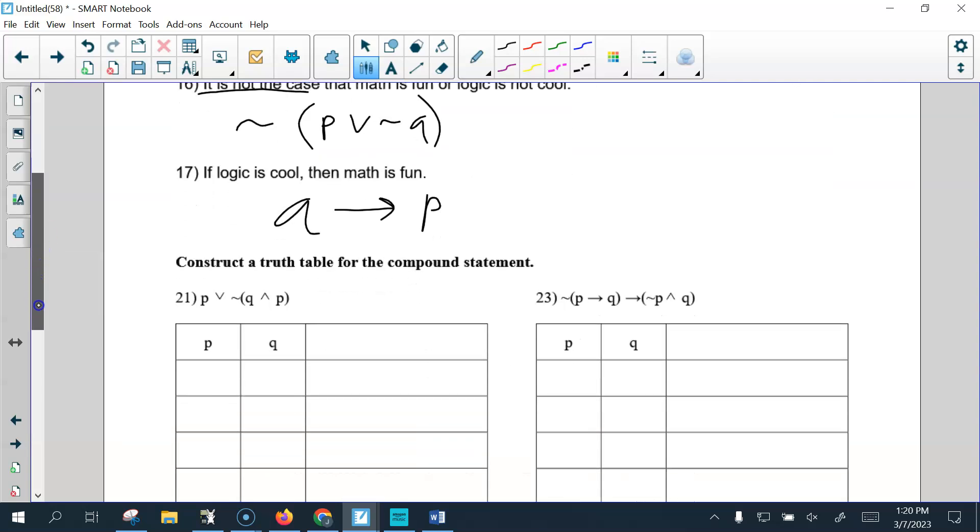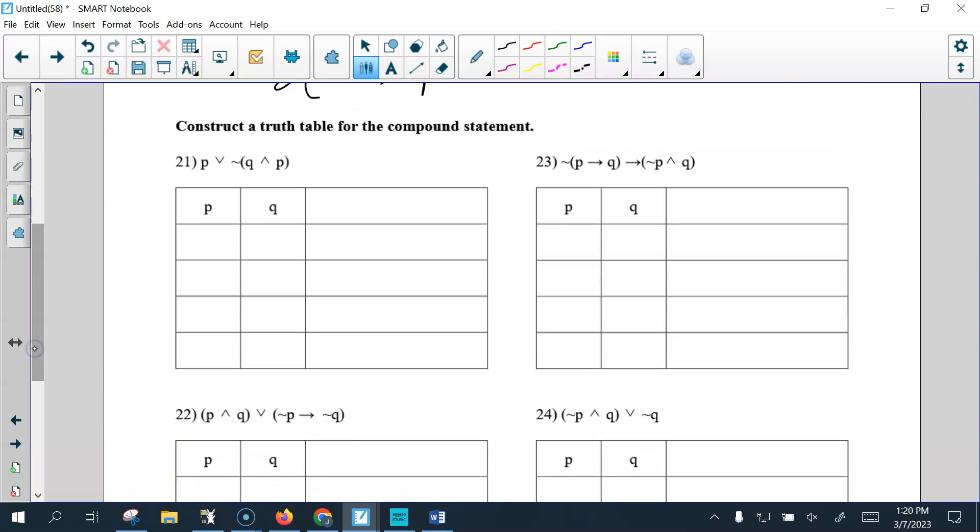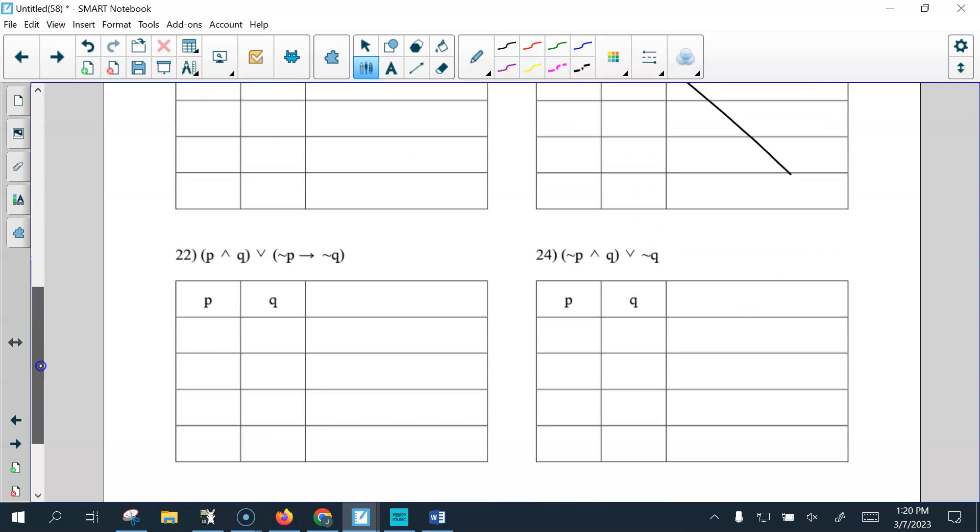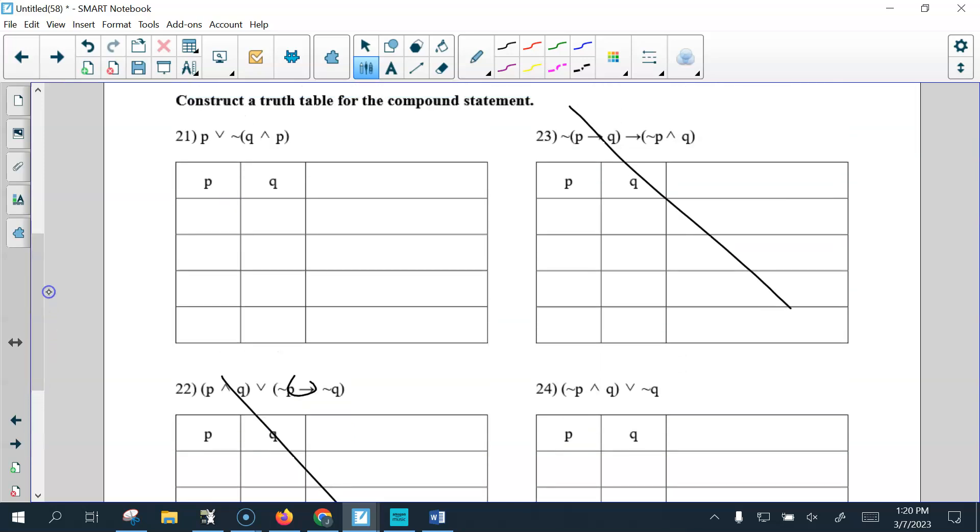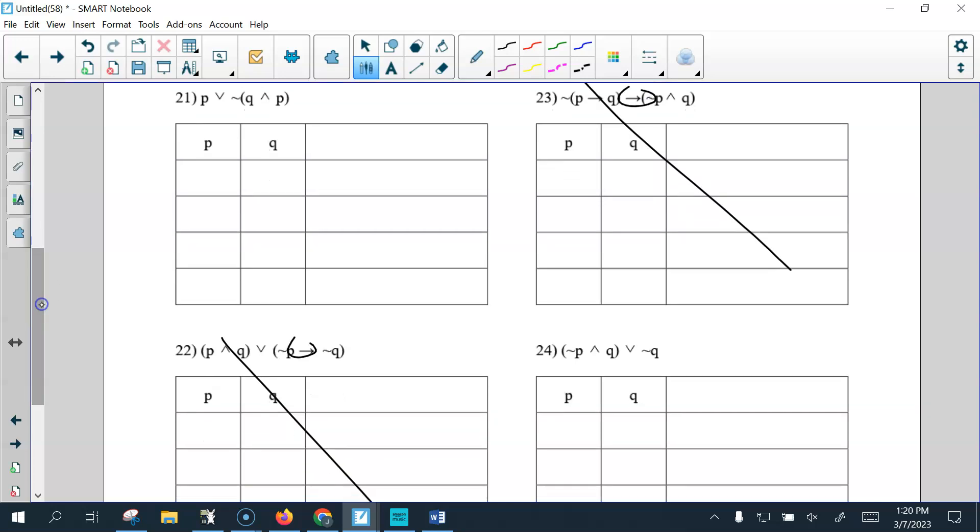And, we didn't have this in the notes, but not a big deal, because I'm going to take out more of the problems later. But, if, then, we use an arrow. So, if logic is cool, then math is fun. And, that's all we're going to do. So, down here, in fact, you can go ahead and cross off 23 and 22. We're not doing this, we did not do this in the notes, so we're not worrying about if-thens. So, we're only going to do 21 and 24.